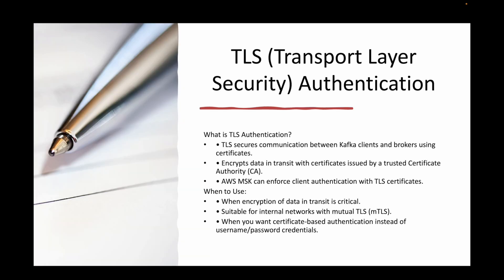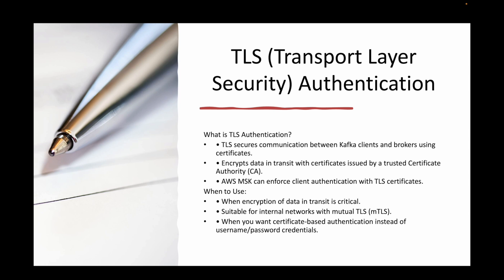The first one is TLS authentication. When you use TLS authentication, it secures communication between Kafka clients and brokers using certificates. You have a Kafka broker and a Kafka client, and the communication between these two is secured at the TLS level using certificates — data in transit — with a certificate issued by a trusted body, AWS MSK, or AWS itself.